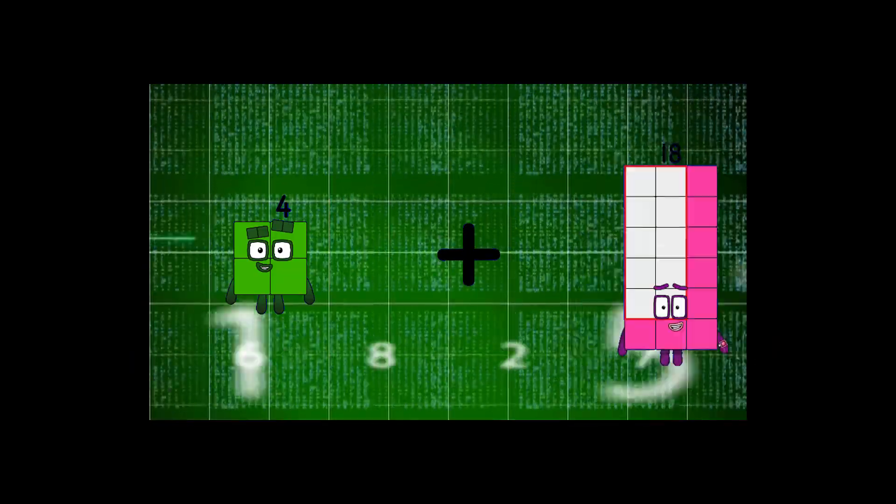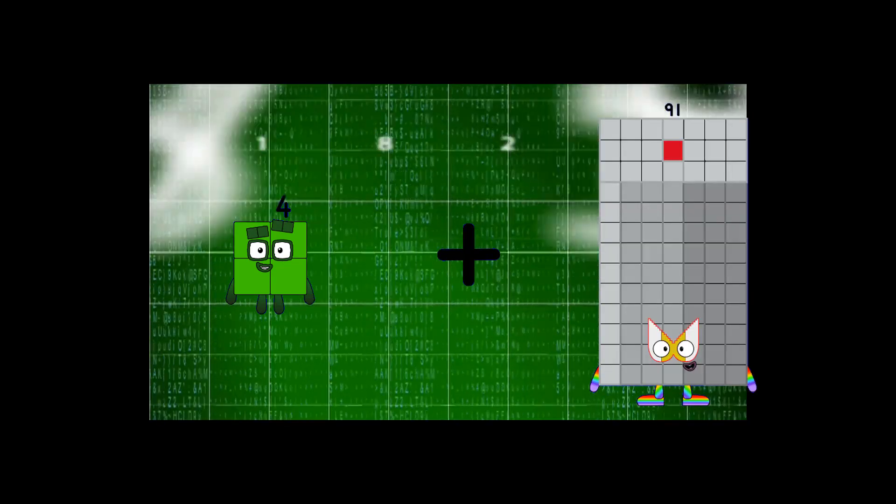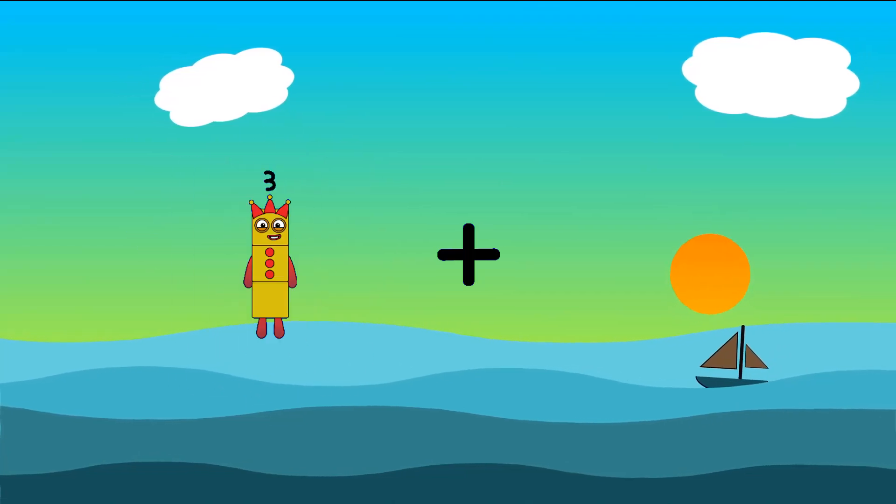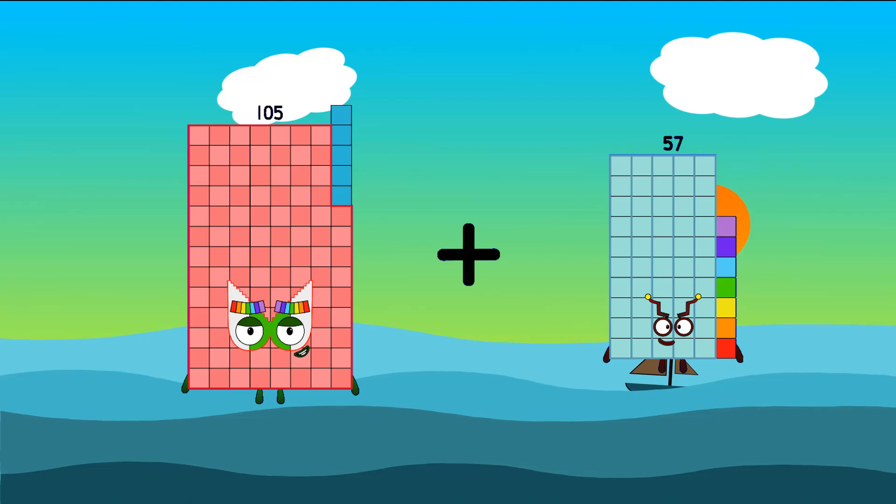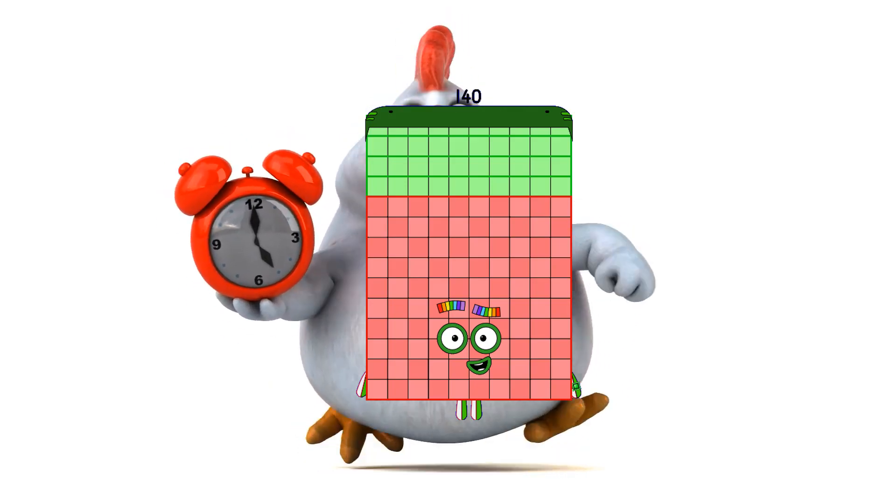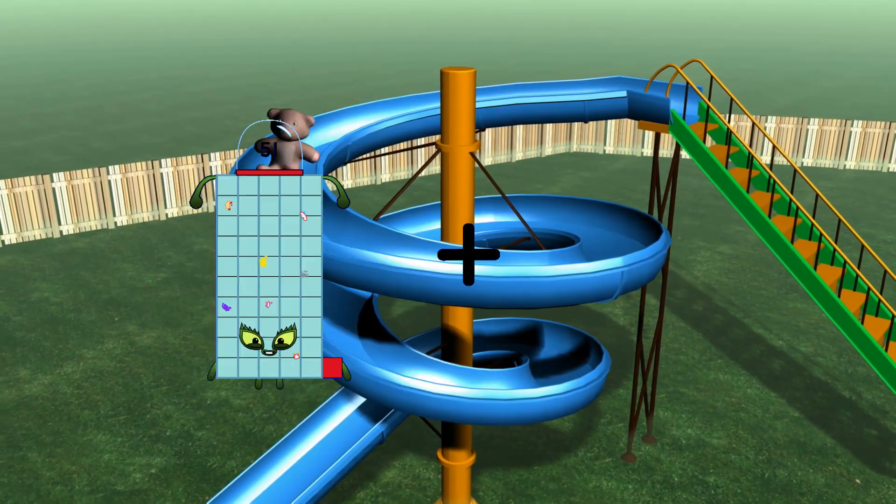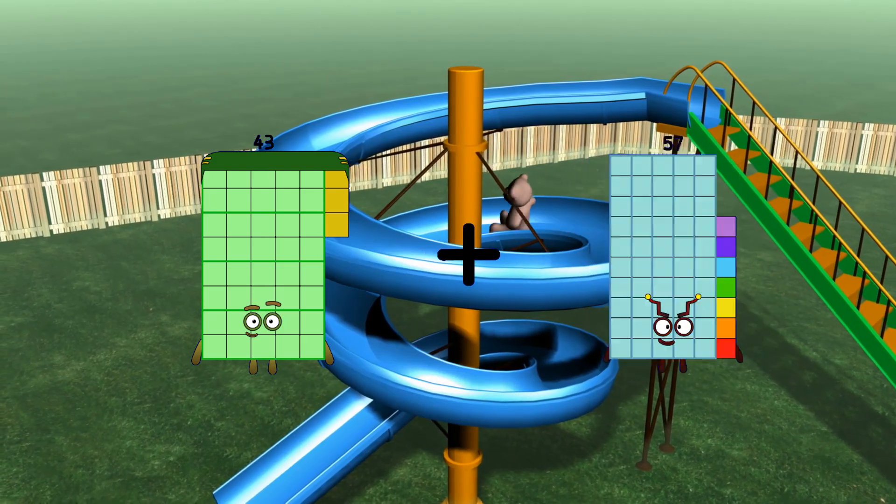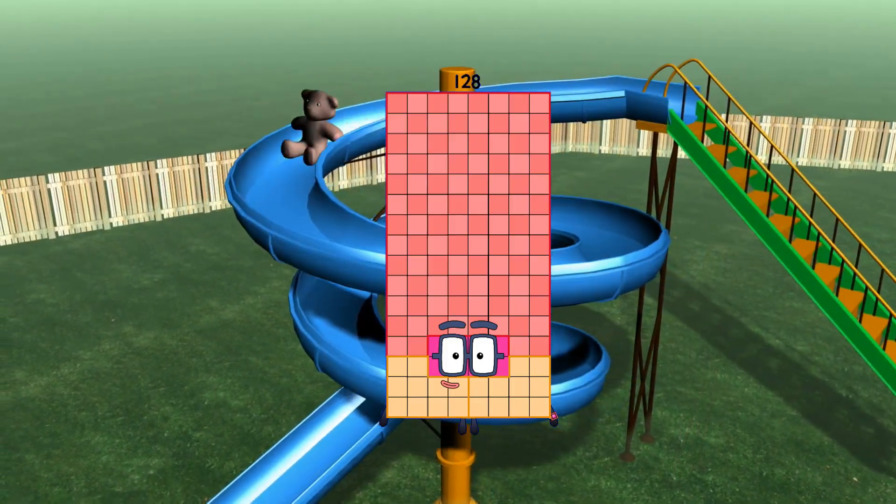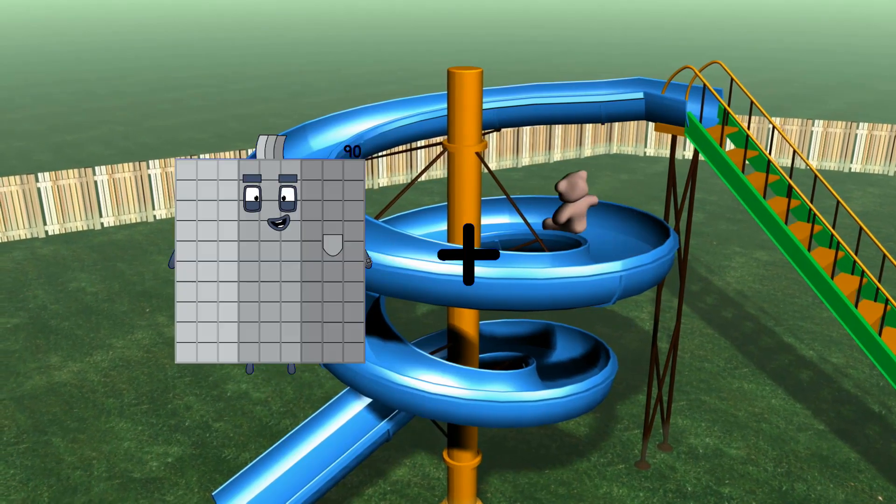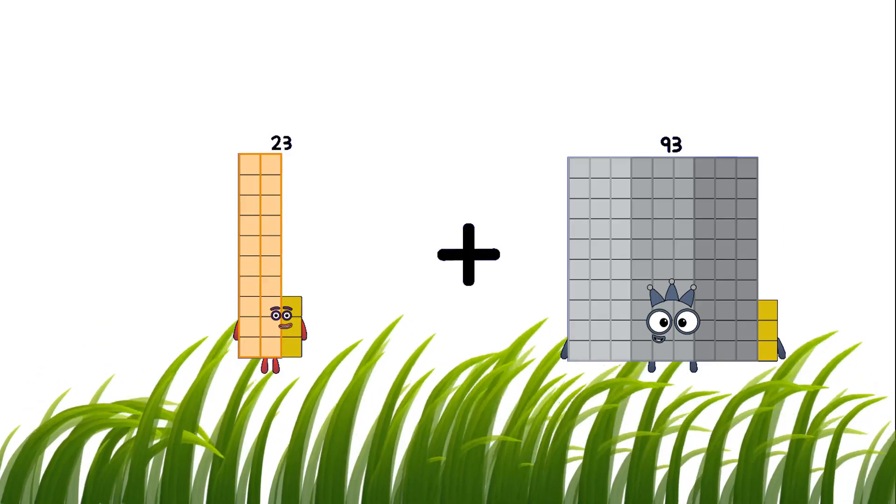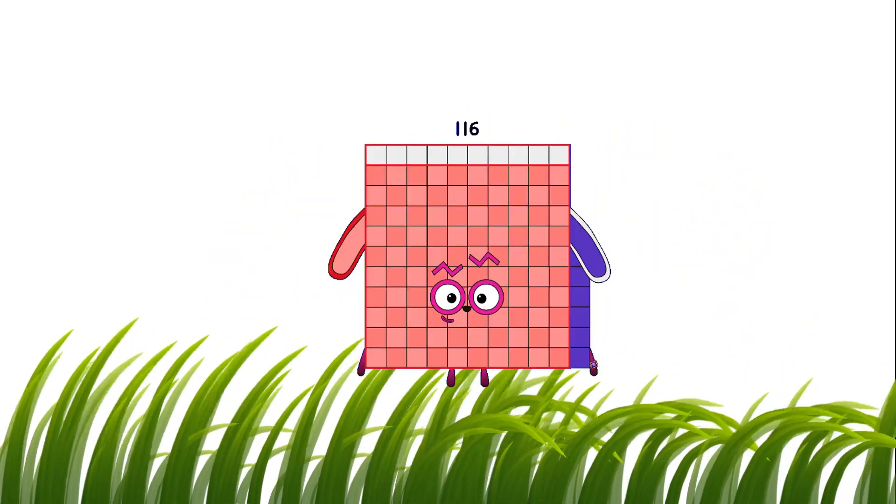4 plus 91 equals 95, 105 plus 35 equals 140, 43 plus 85 equals 128, 23 plus 93 equals 116.